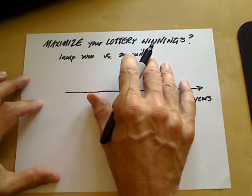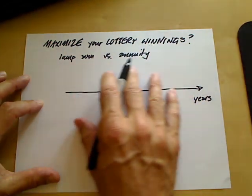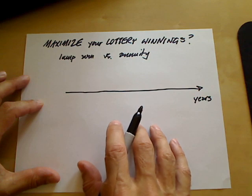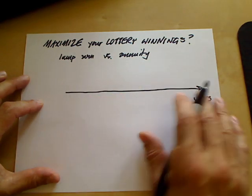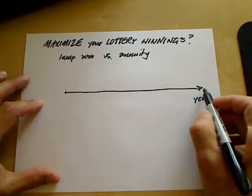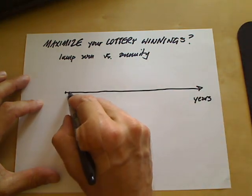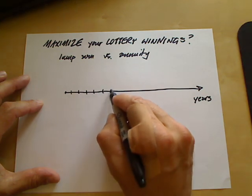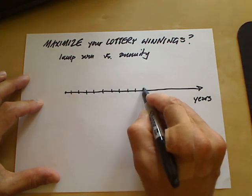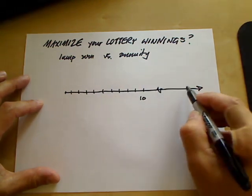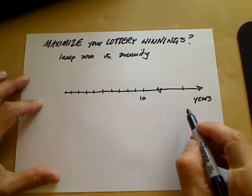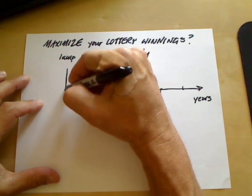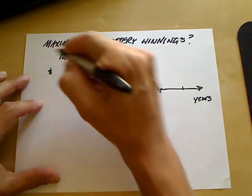To study this question — which is a good way of illustrating the principles and utility of the cash flow diagram — you make a timeline. This axis represents the years, going out to however many years the winnings will be spread out. The next axis represents cash.